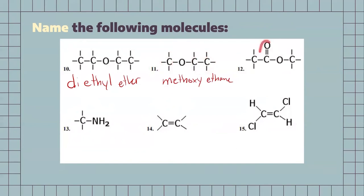For number 12, recognizing the group, that's going to be an ester. We have a methane on one side, and we also have an ethane. Properly writing this one out with the smallest chain first: methylethanoate.